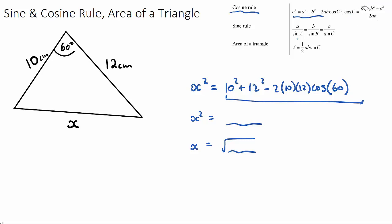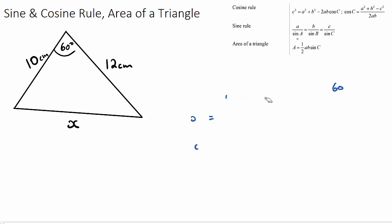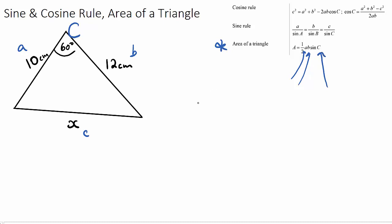Finally, the area of a triangle. The formula is: Area equals one half times A times B times sine C. All that means is if we have two side lengths A and B, and the angle C between them, we can calculate the area. For our example, the area would be one half multiplied by 10 and 12 — our two known side lengths — multiplied by sine of 60, the angle between them. We simply type this into our calculator.